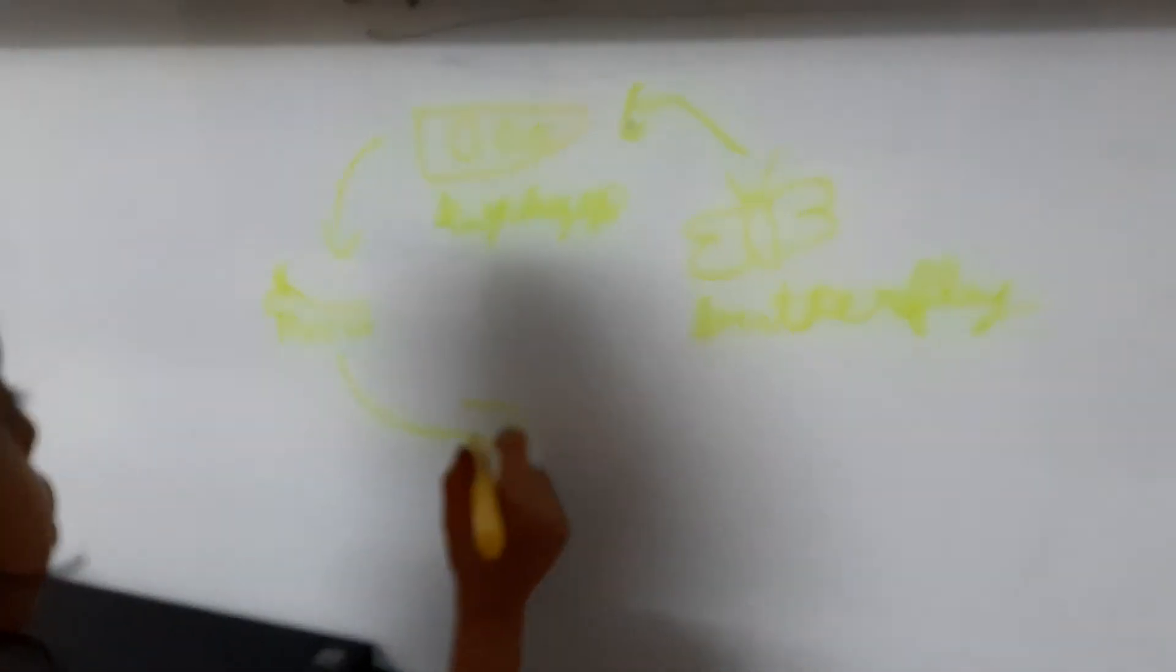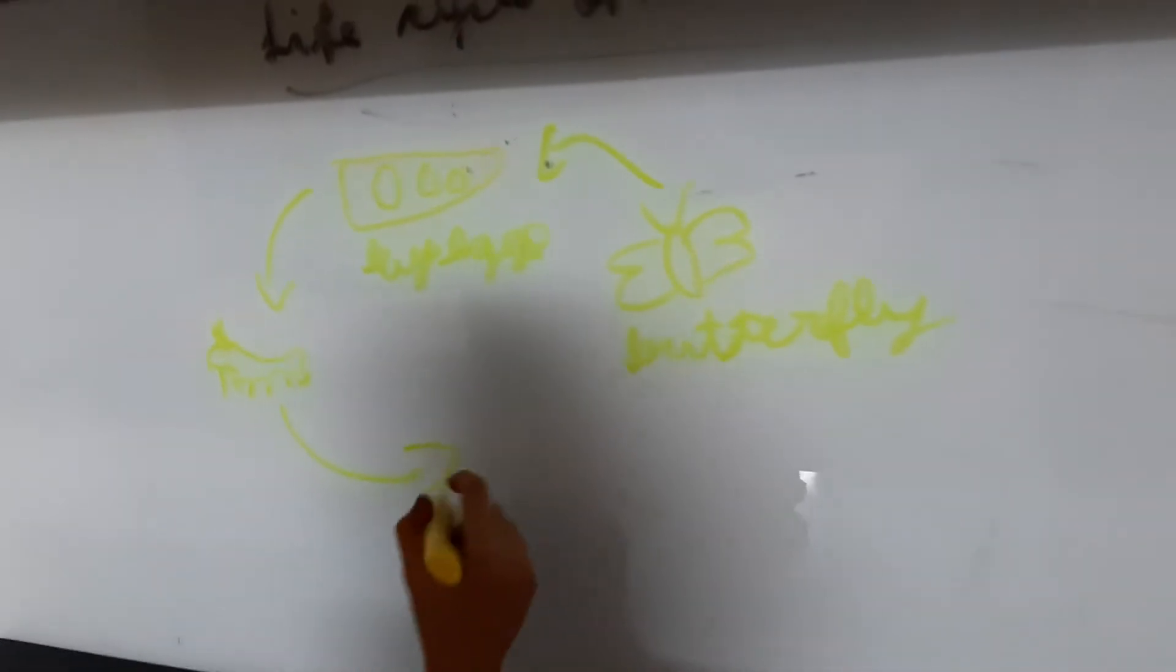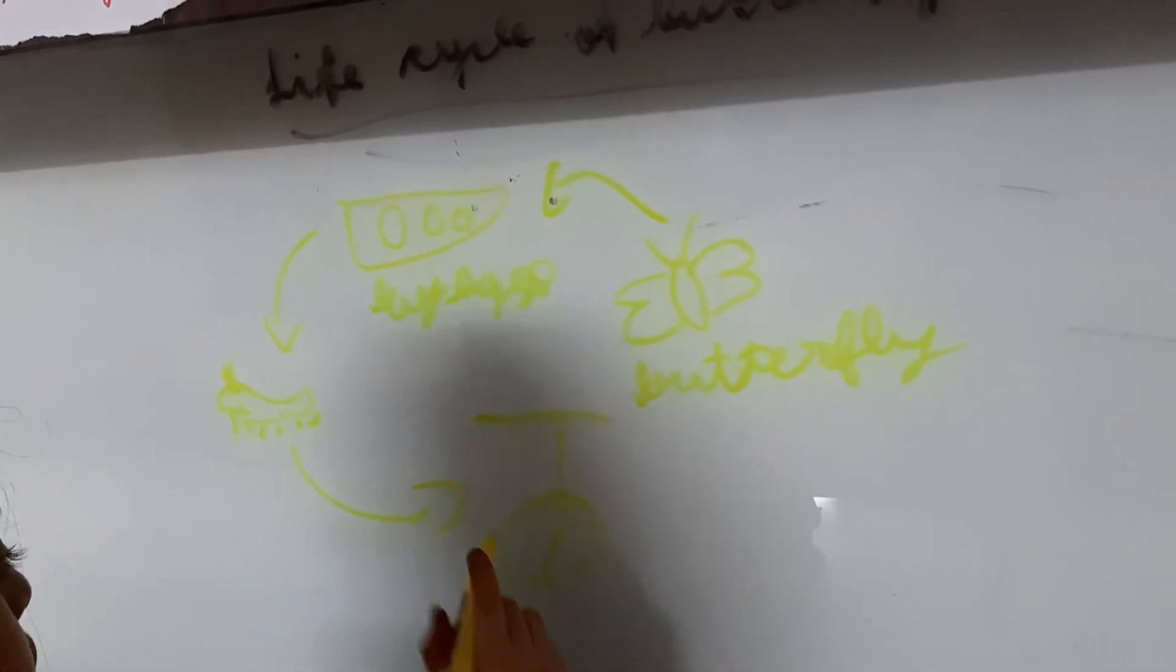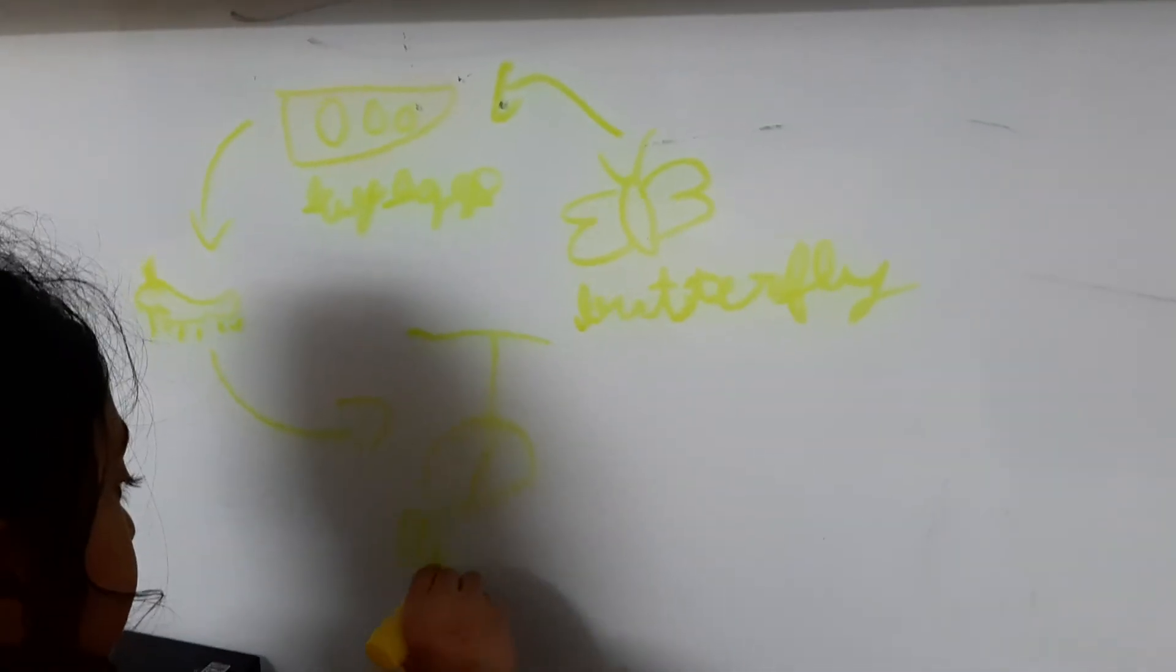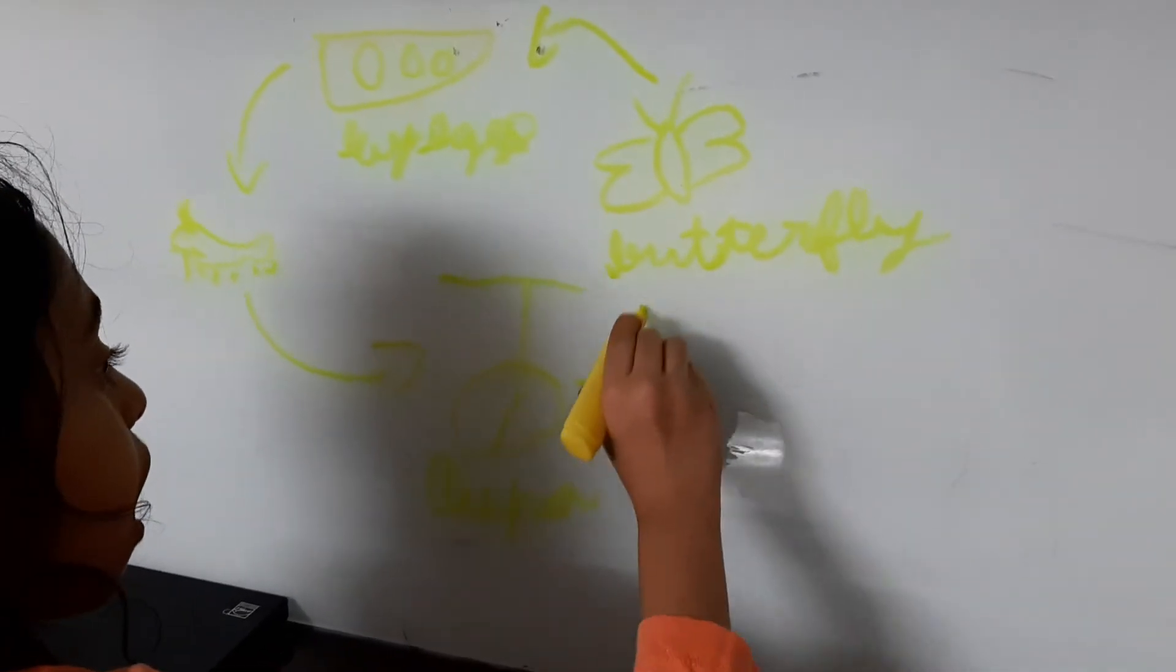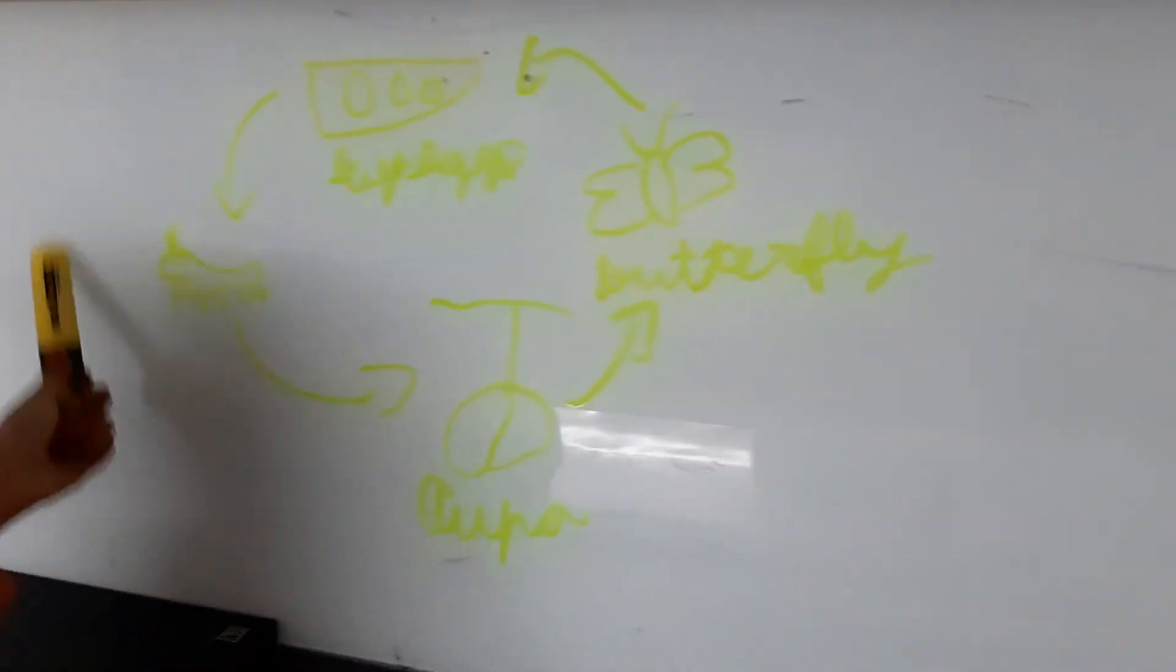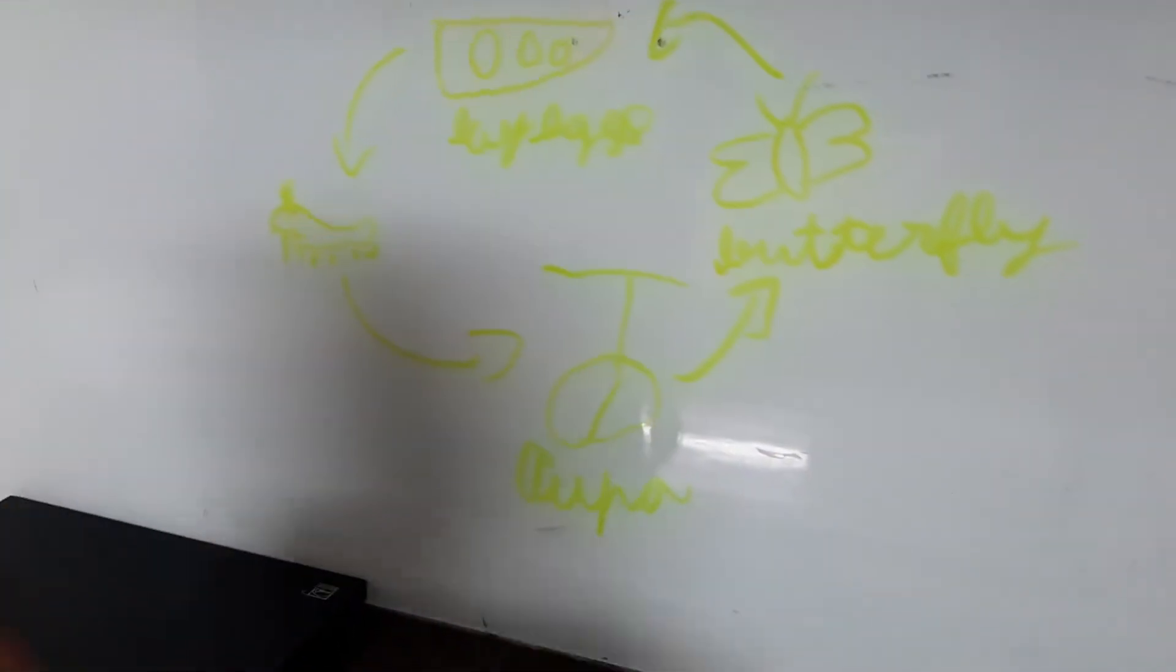Then after a few days when it becomes old enough it will make this structure called pupa. After 15 days it will become a butterfly. This is the life cycle of butterfly.